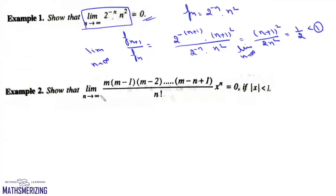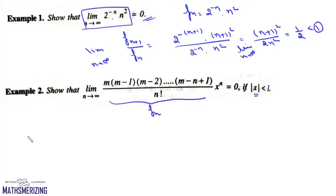Now the next question is: show that limit n tends to infinite of m(m-1)(m-2)···(m-n+1) upon factorial n, into x to the power n, is equal to 0 if mod x is less than 1. Suppose this is f(n); we will find the limit n tends to infinite of f(n+1) upon f(n).